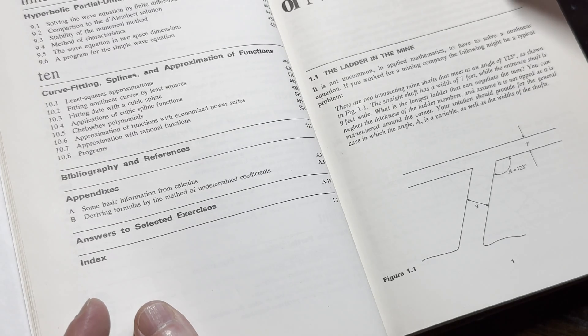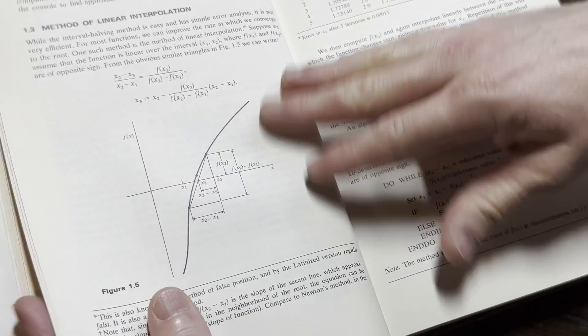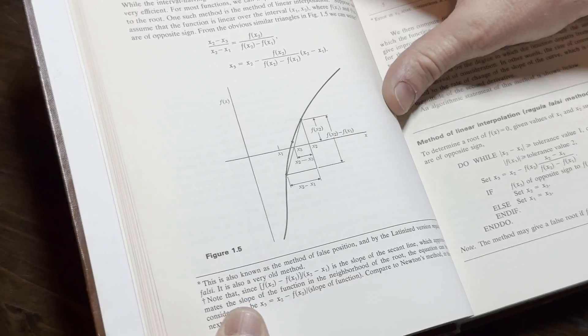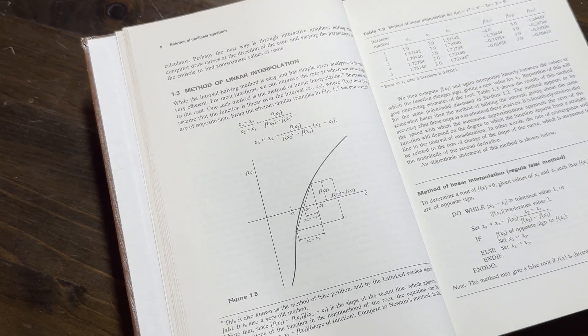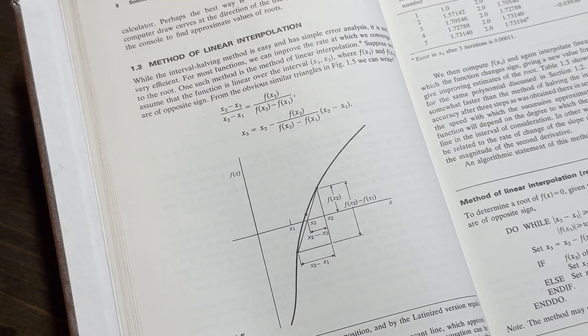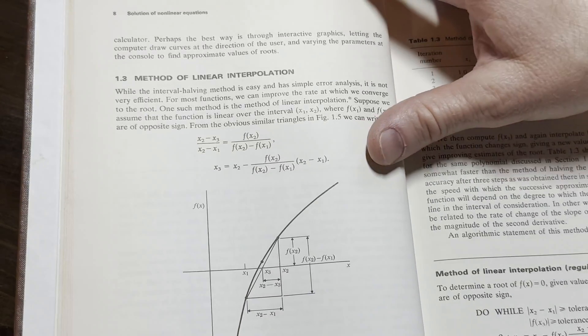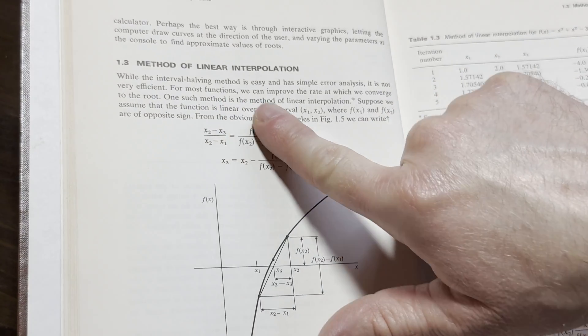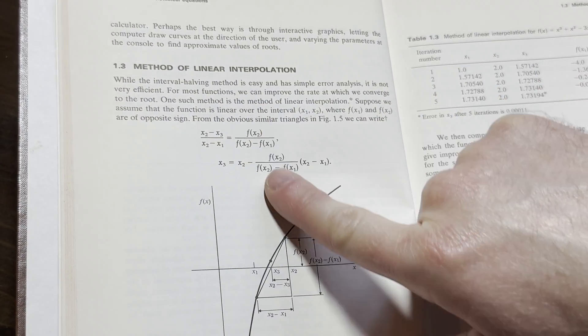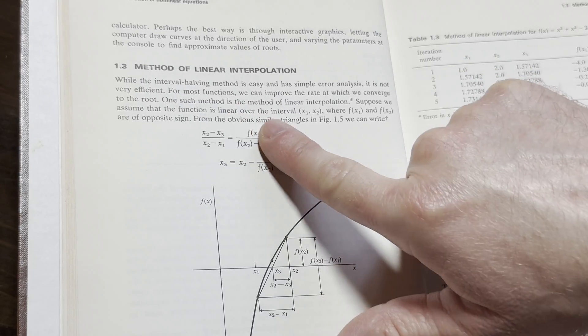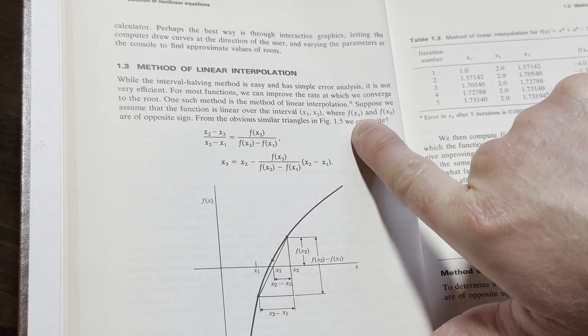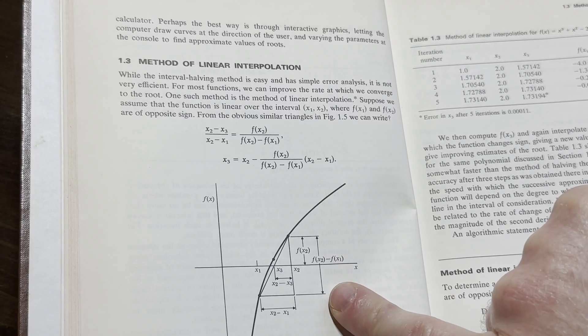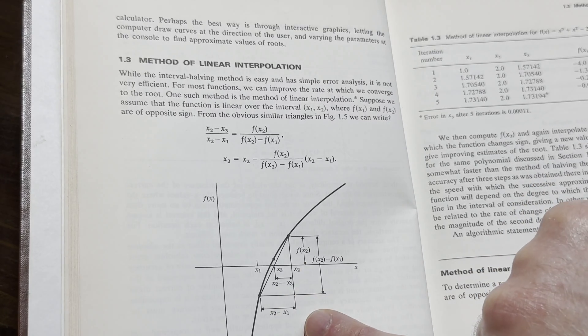So yeah, it's a book you could use to learn numerical analysis. Here's an example. This is interesting. It says here, method of linear interpolation. That's pretty cool. So you have a function that's linear over this interval where these are opposite signs. So you have a graph here.